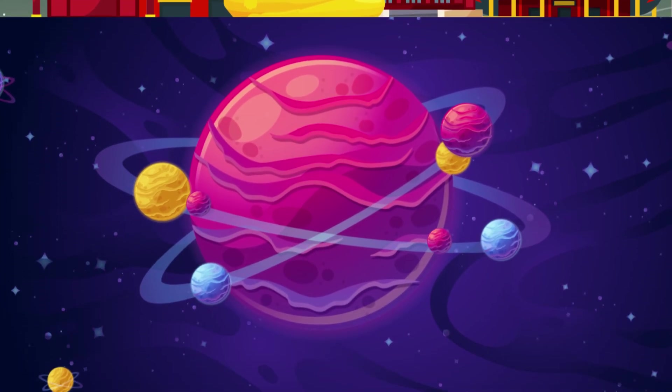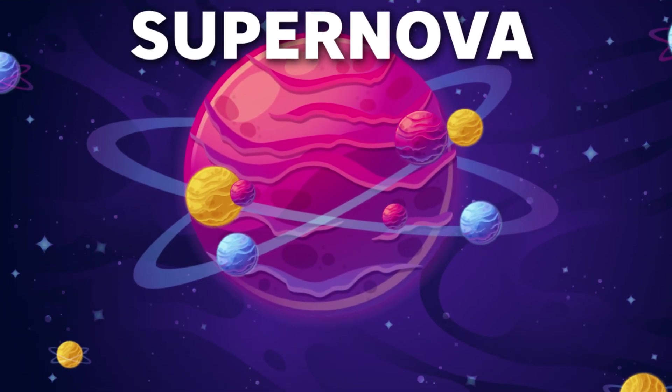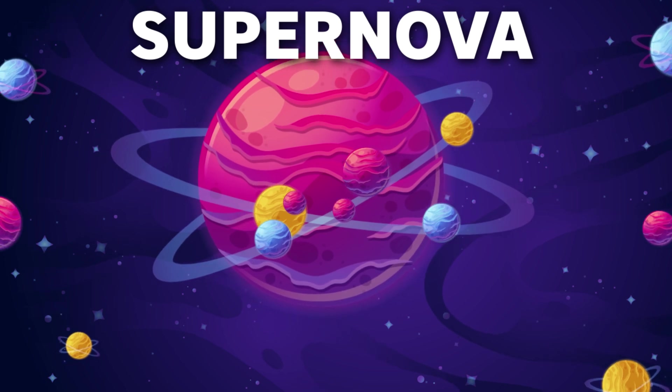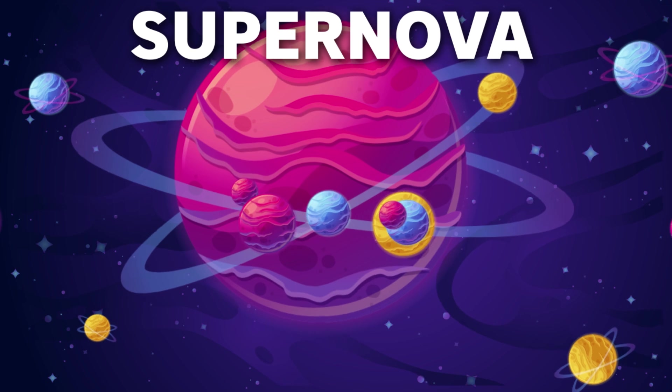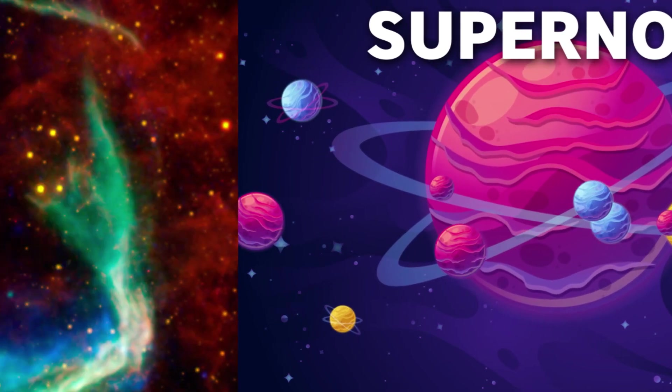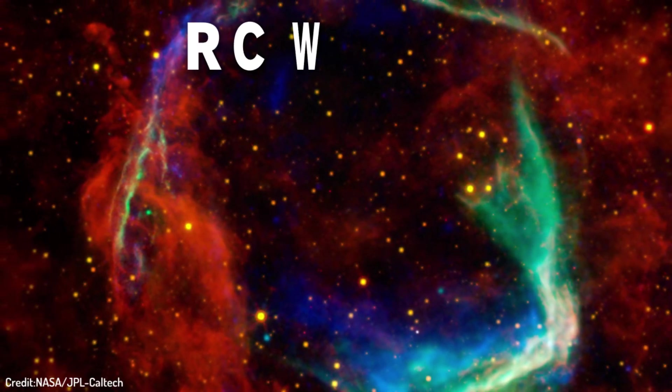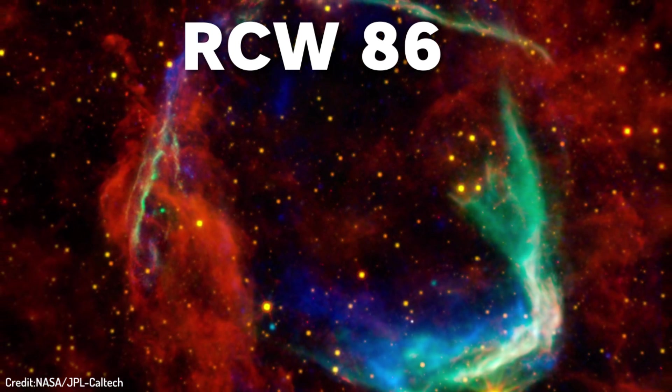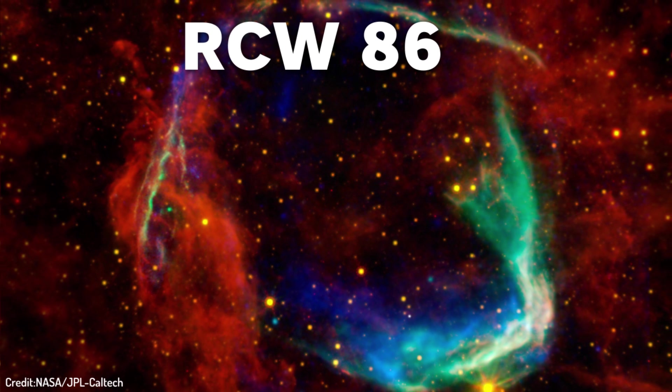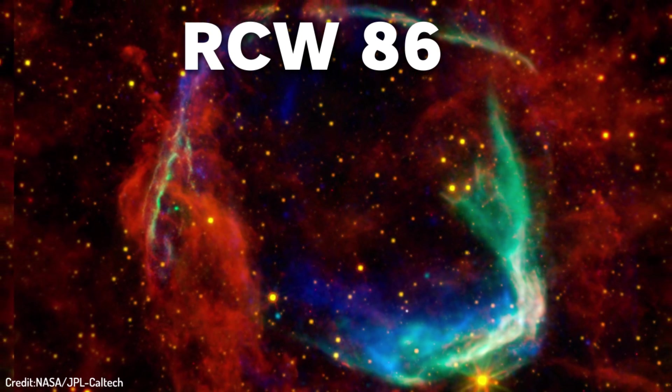That new star was a supernova. A star that had run out of fuel and then collapsed in on itself in a thousandth of a second, creating a massive explosion. This is the same picture of what is left from that same explosion that Chinese astronomers saw 2,000 years ago, RCW 86 supernova remnant which is approximately 8,000 light years away.